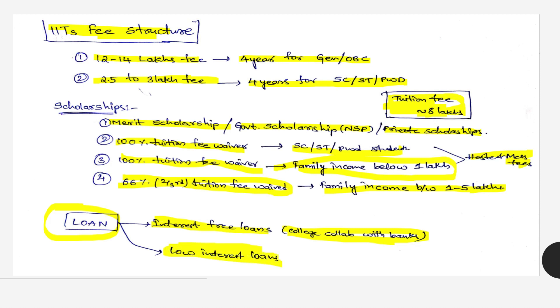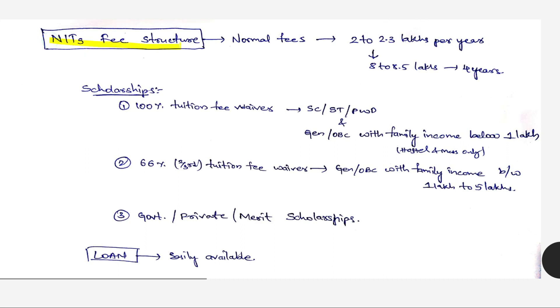Next comes NITs fee structure. It will be normal fees at 2 to 2.3 lakhs per year, and overall in 4 years you will need to pay 8 to 8.5 lakhs for 4 years.